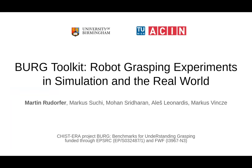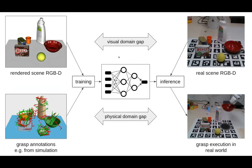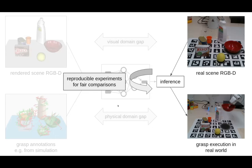Hi, I'm Martin from the University of Birmingham. Today I present our BOOK toolkit — a set of tools for reproducible robot grasping experiments in simulation and the real world. Learning-based grasping methods typically rely on synthetic training data including rendered scene images and grasp annotations. During inference, we observe real scenes and execute grasps in the real world — leading to two domain gaps: the visual domain gap (difference in image appearance) and the physical domain gap (difference in grasp execution between simulation and real world). While the visual domain gap is addressed by many works, we investigate the physical domain gap, which is less frequently addressed. Reproducibility of experiments is also an issue — fair benchmarking requires evaluating models on exactly the same benchmark scenes.